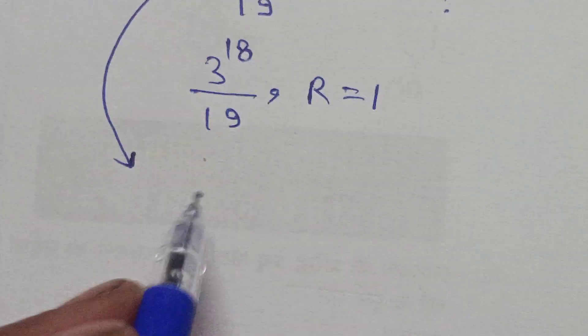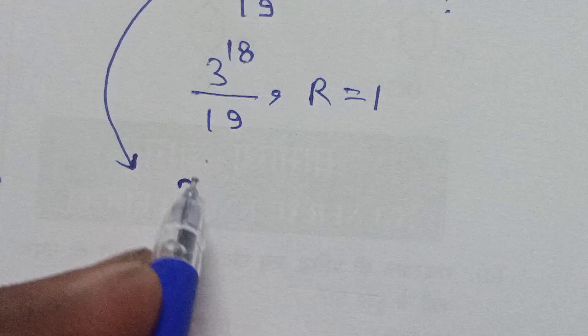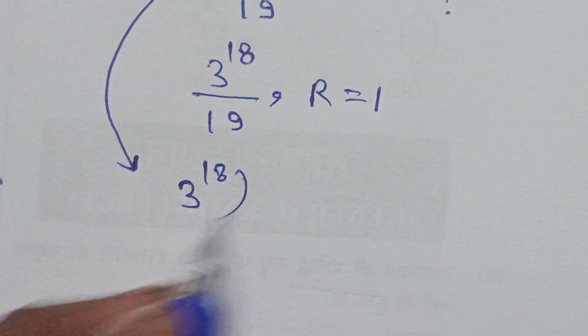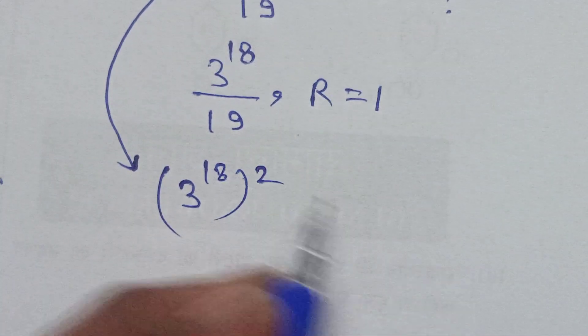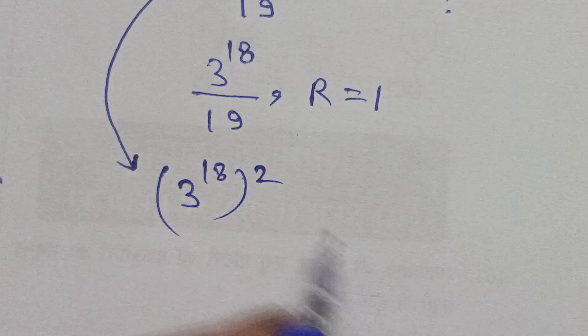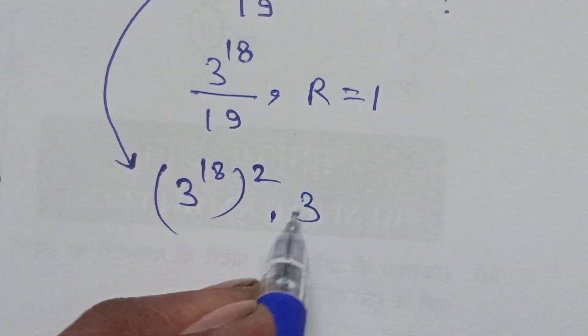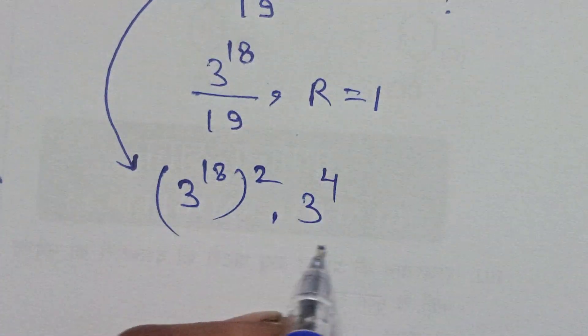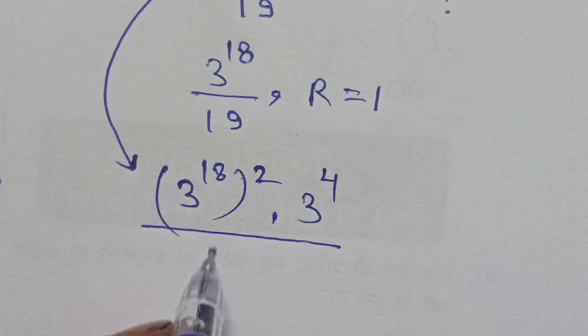Therefore, 3 to the power 18 to the power 2 and 3 to the power 4 divided by 19.